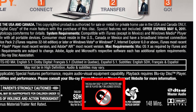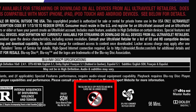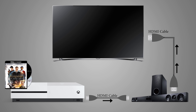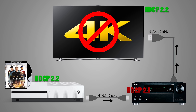Some 4K content is protected using HDCP 2.2, and if any device in the chain doesn't support that version, you're either going to get no video or you'll be limited to 1080p. For example, even though your 4K Blu-ray player and TV probably support HDCP 2.2, your sound bar might not — and in that case you'll either get no video at all or be limited to 1080p. The same is true for a home theater receiver: if it doesn't support the right version of HDCP, you're not going to get 4K video.